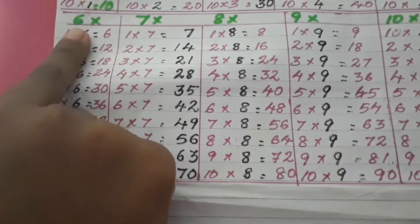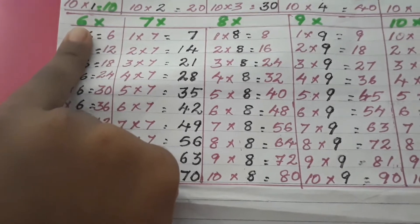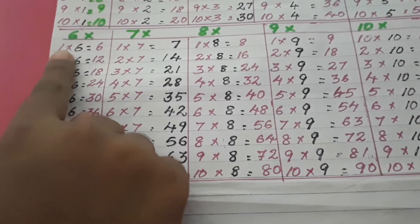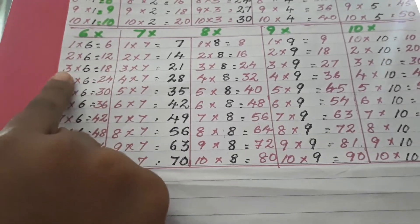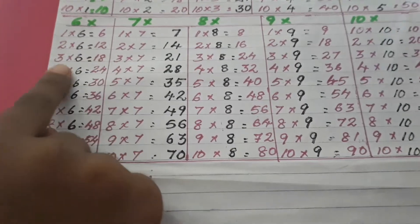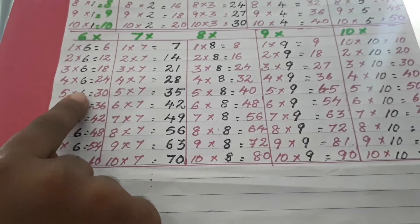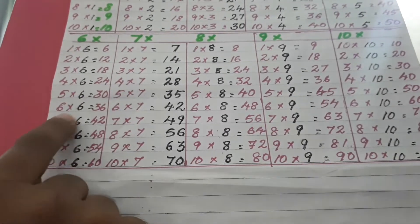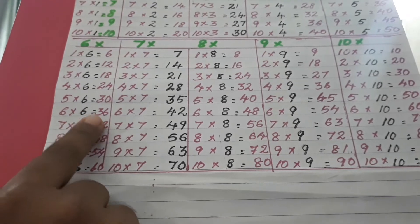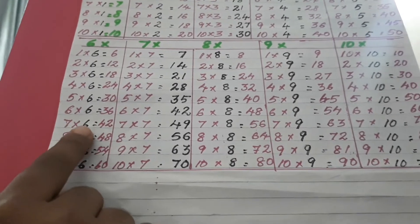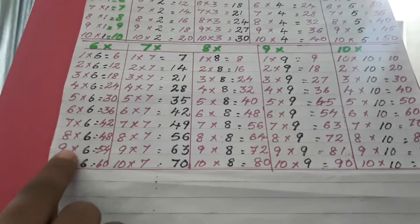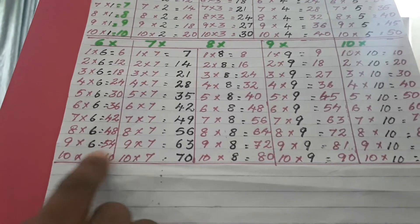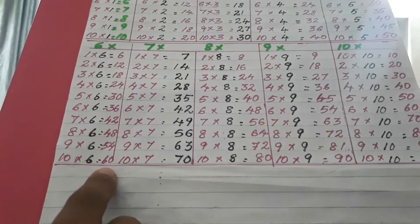Now, let's see table of 6. 1 six is 6. 2 sixes are 12. 3 sixes are 18. 4 sixes are 24. 5 sixes are 30. 6 sixes are 36. 7 sixes are 42. 8 sixes are 48. 9 sixes are 54. 10 sixes are 60.